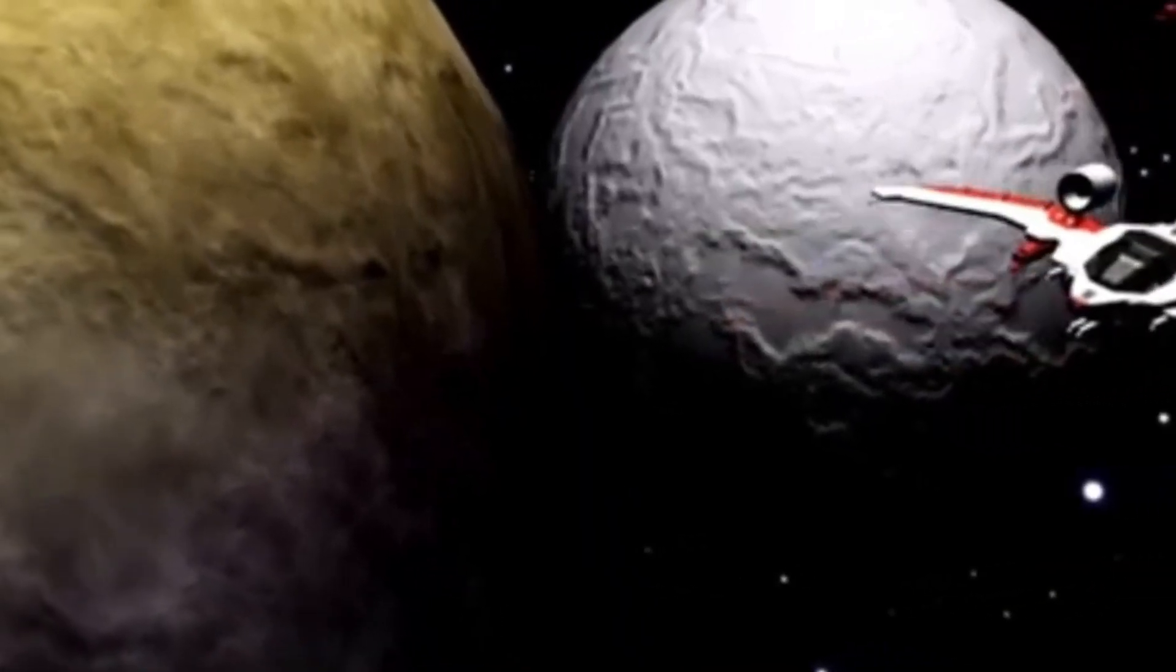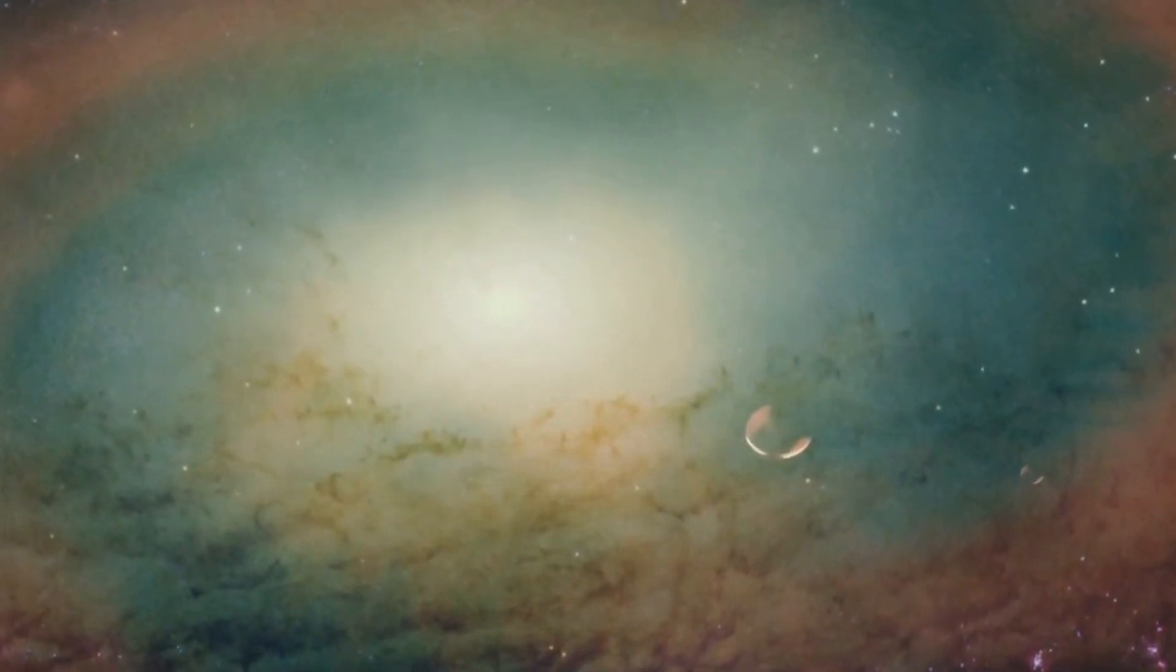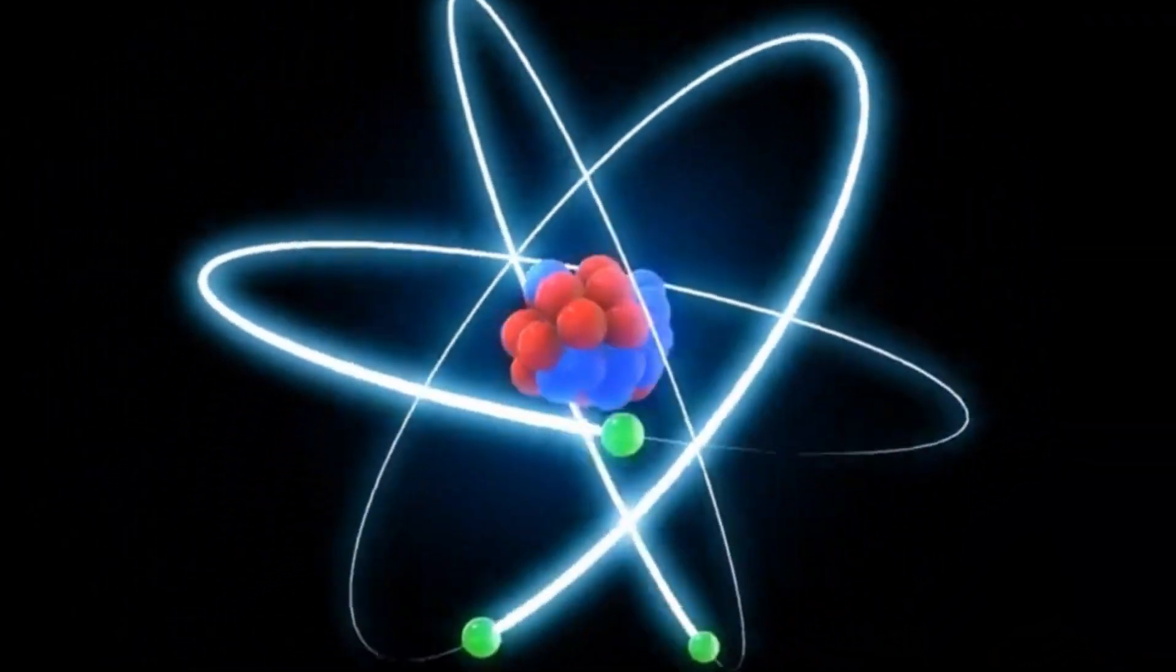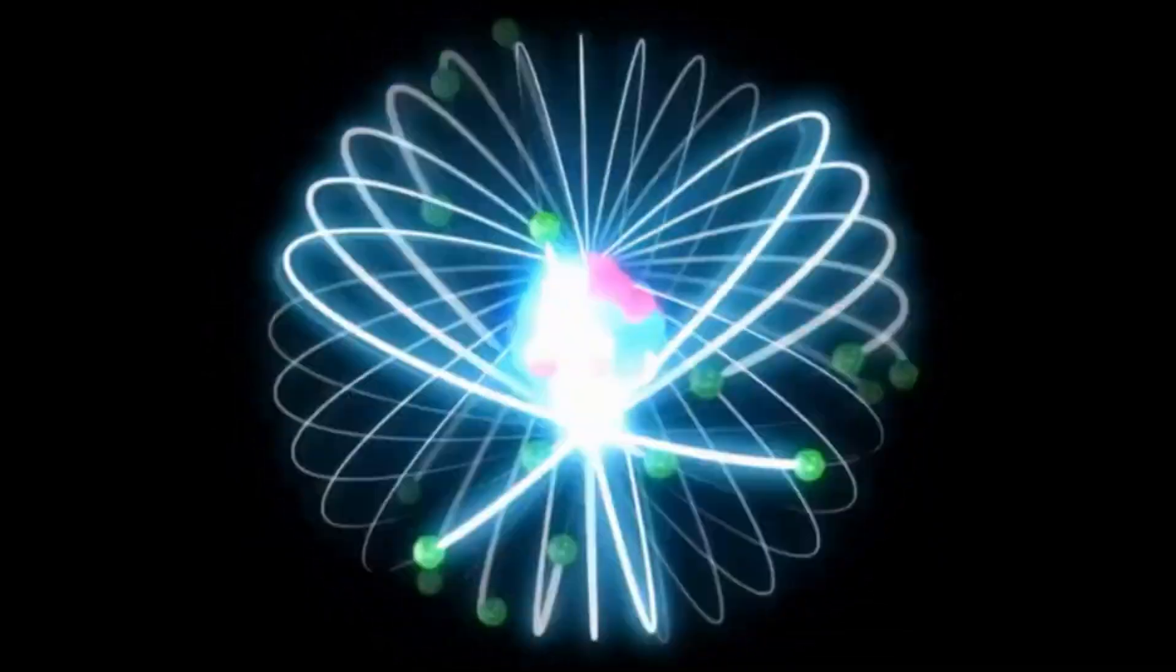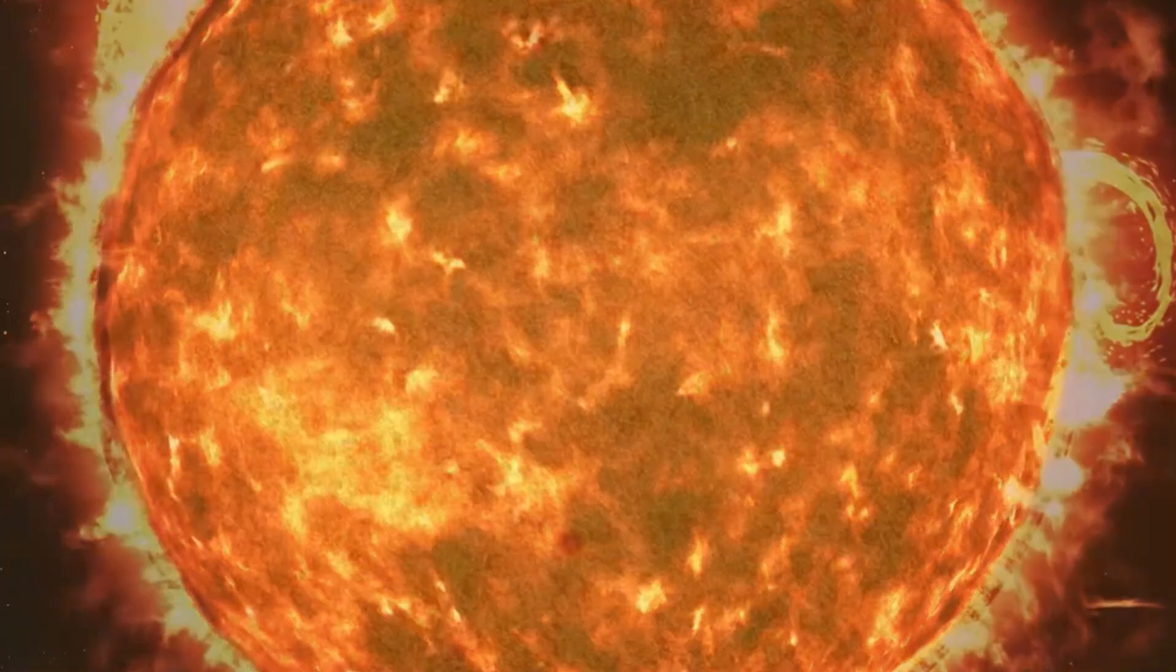Betelgeuse, as a red supergiant star, occupies a critical stage in stellar evolution. Its immense size and mass make it a key player in the cosmic theater, where the forces of gravity, radiation pressure, and nuclear reactions interact to shape the destiny of stars. By studying Betelgeuse, scientists gain valuable insights into the final stages of a massive star's life.